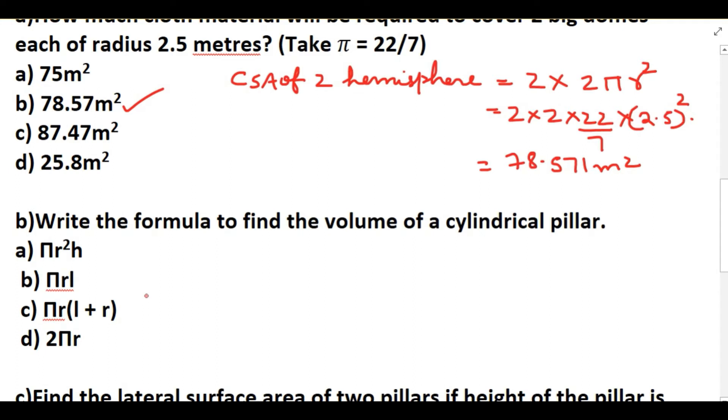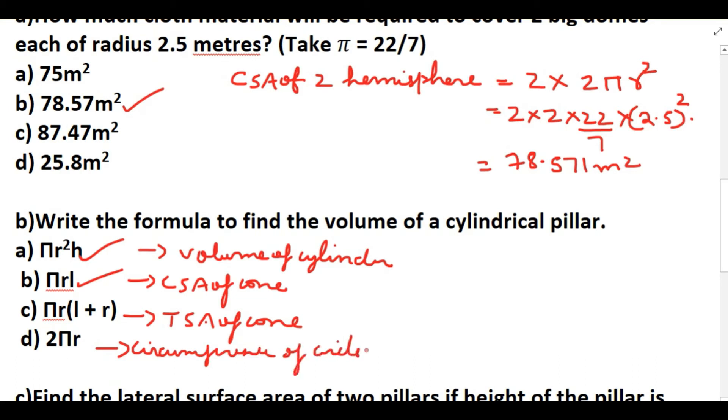Next question: Write the formula to find out volume of cylindrical pillars. It is very easy: πr²h is the volume to find out a cylinder. Again, πrl is the formula to find out CSA of cone, this is the formula to find volume of cylinder. Again, πr(r + l) is nothing but TSA of cone, and 2πr is nothing but circumference of the circle. These are the formulas here. They ask what is the formula to find volume of cylinder, so it is nothing but πr²h.